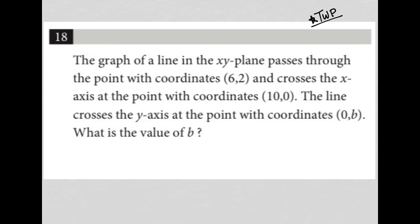But let's read it and see if any other strategies sneak in here. The question says the graph of a line in the XY plane passes through the point with coordinates (6,2) and crosses the X-axis at the point with coordinates (10,0).